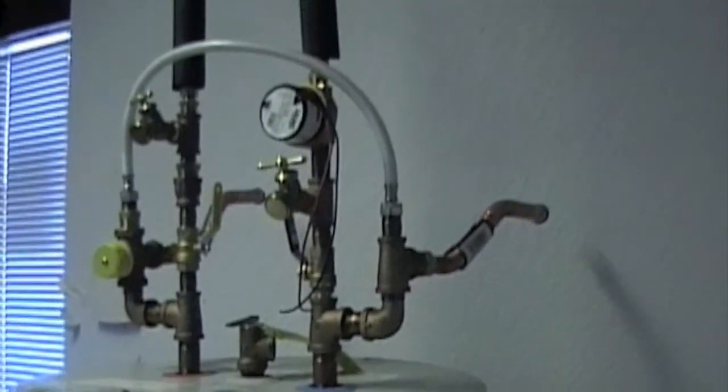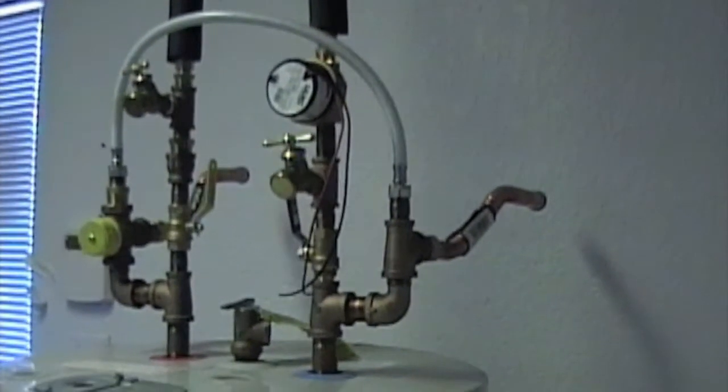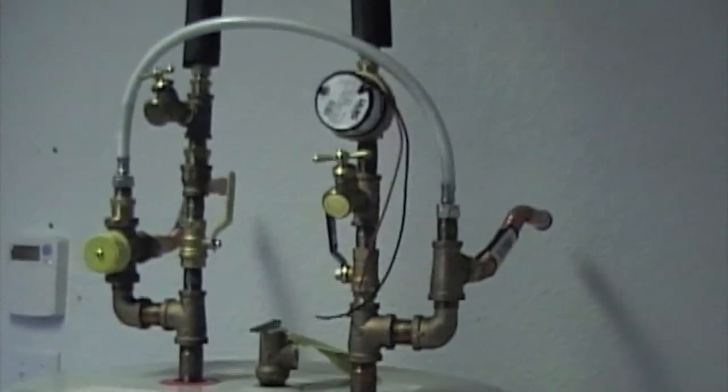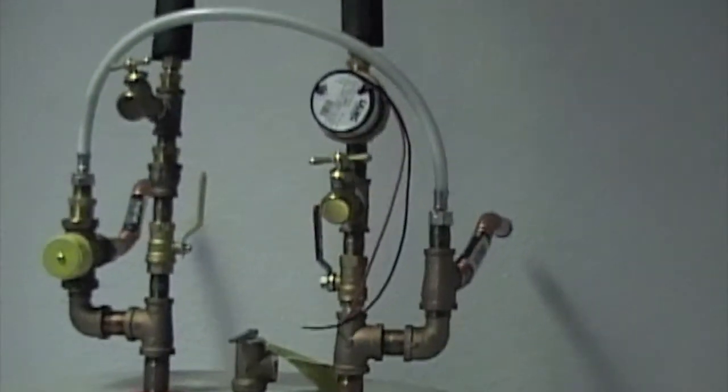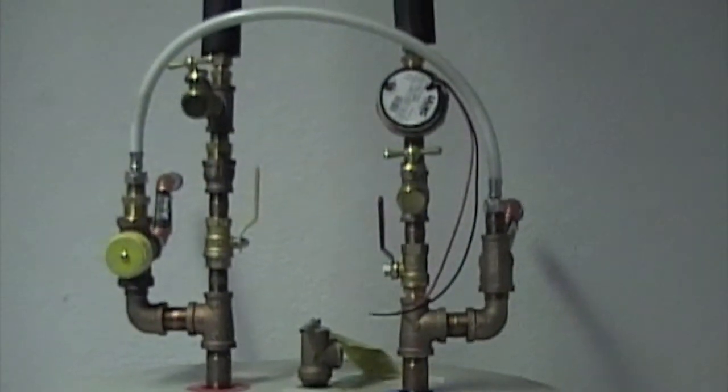Shown here are the connections to a standard two port water heater. On the right is the cold in, on the left is the hot out. On the right you can see the cold coming into the tank and it goes through a dip tube to the very bottom of the tank.